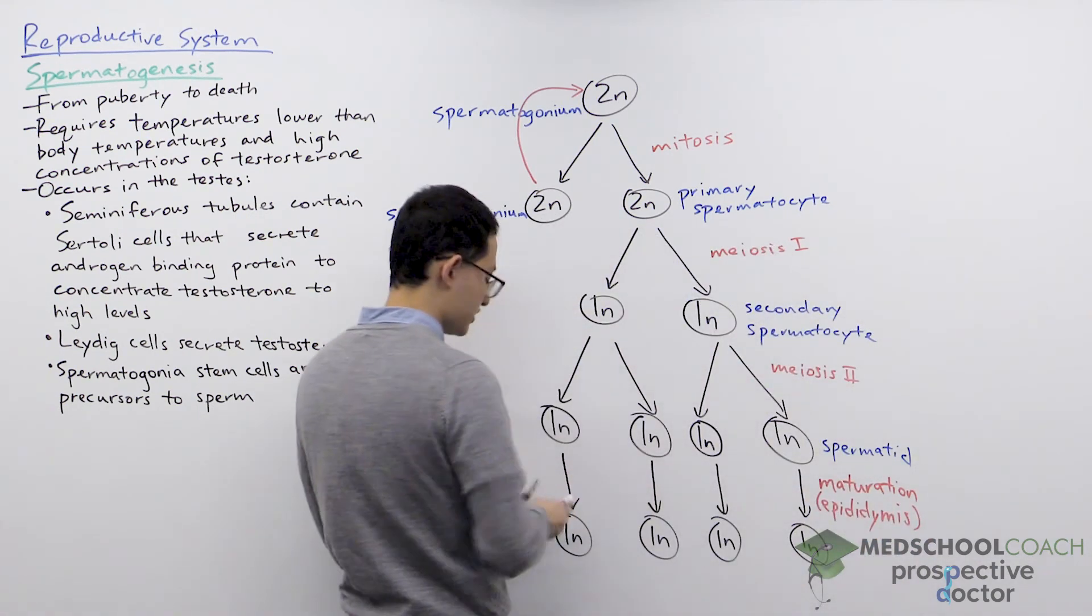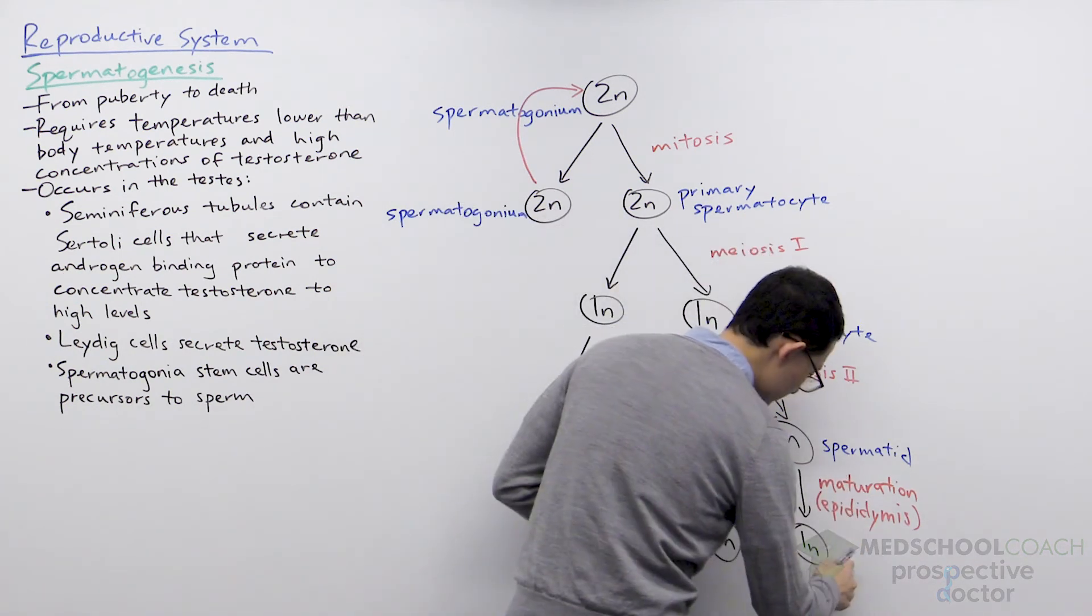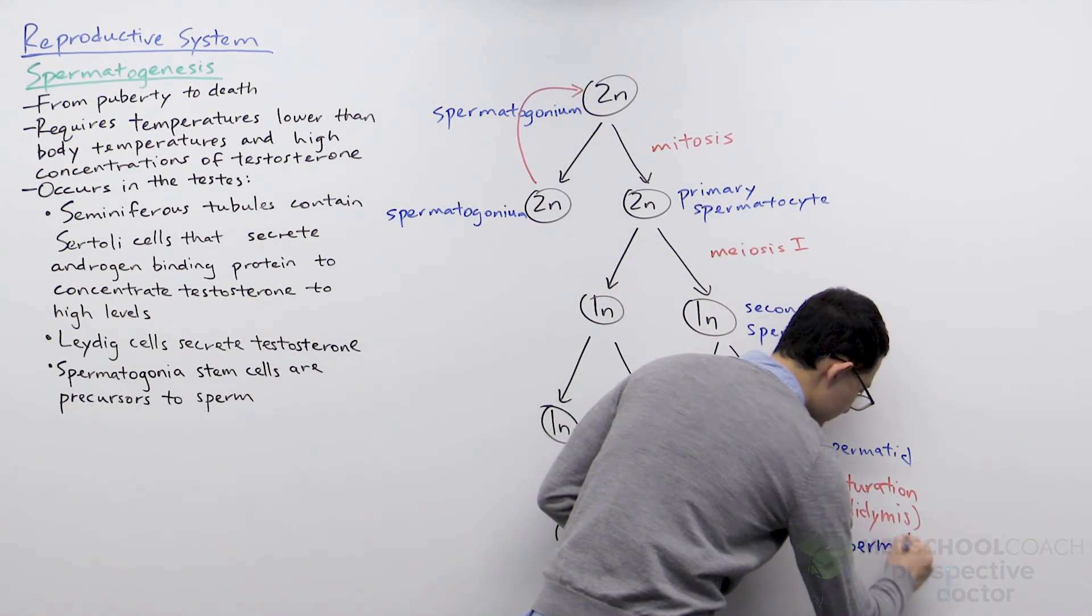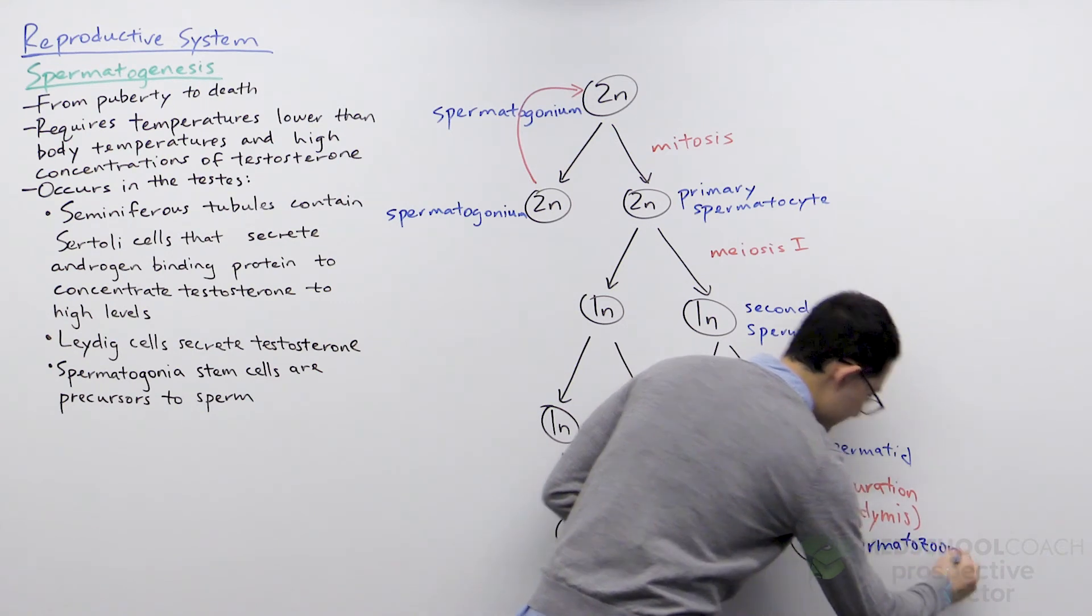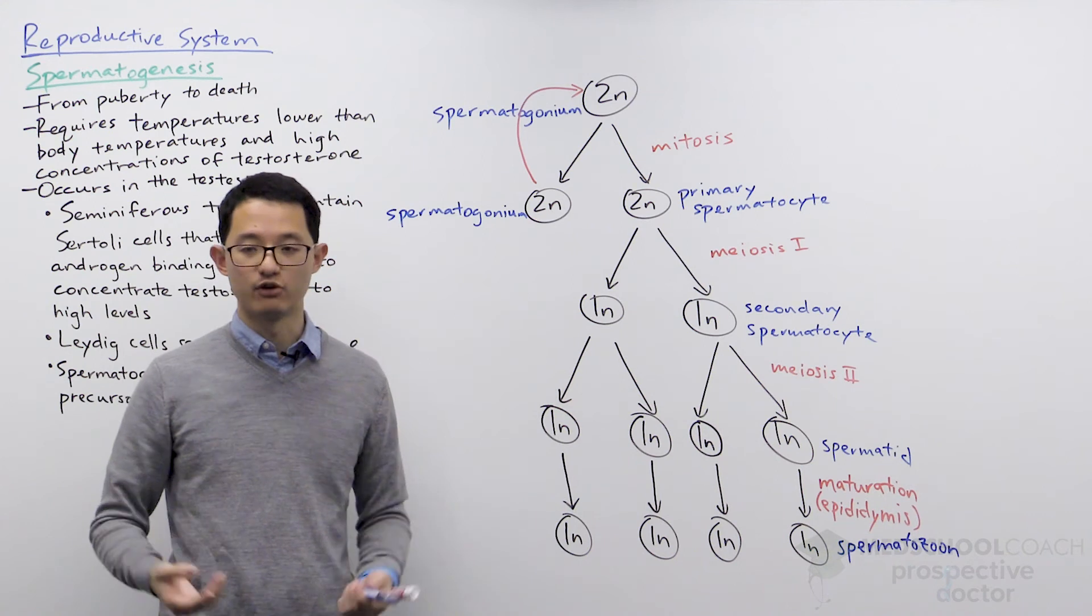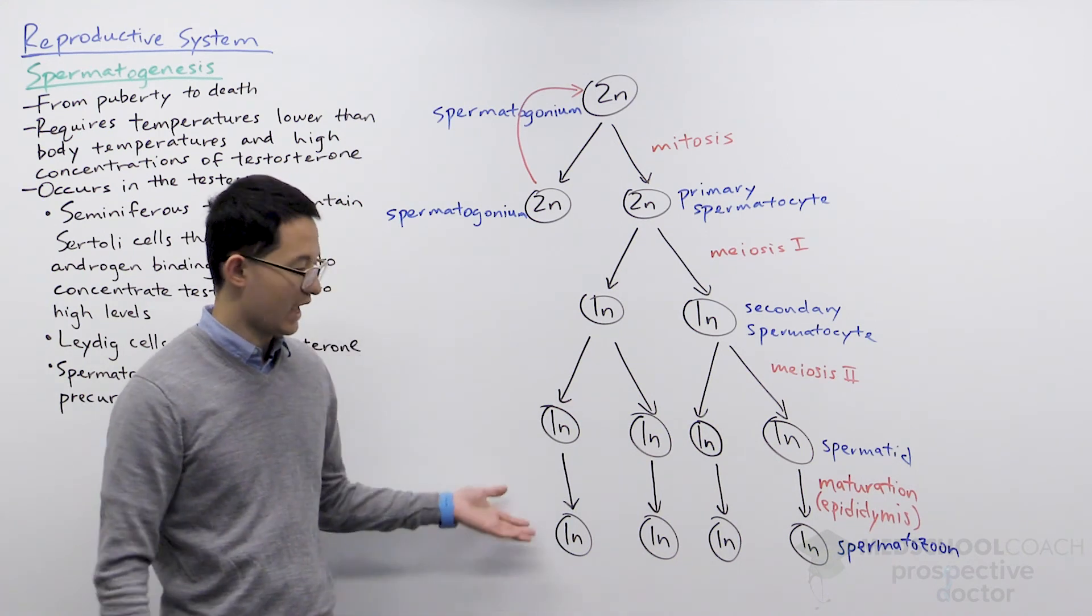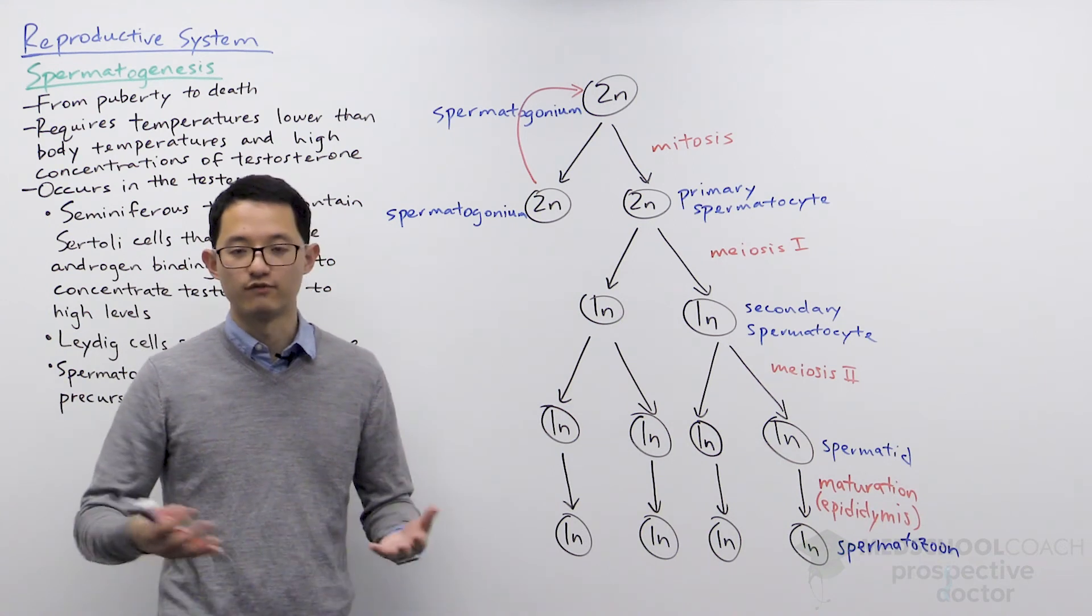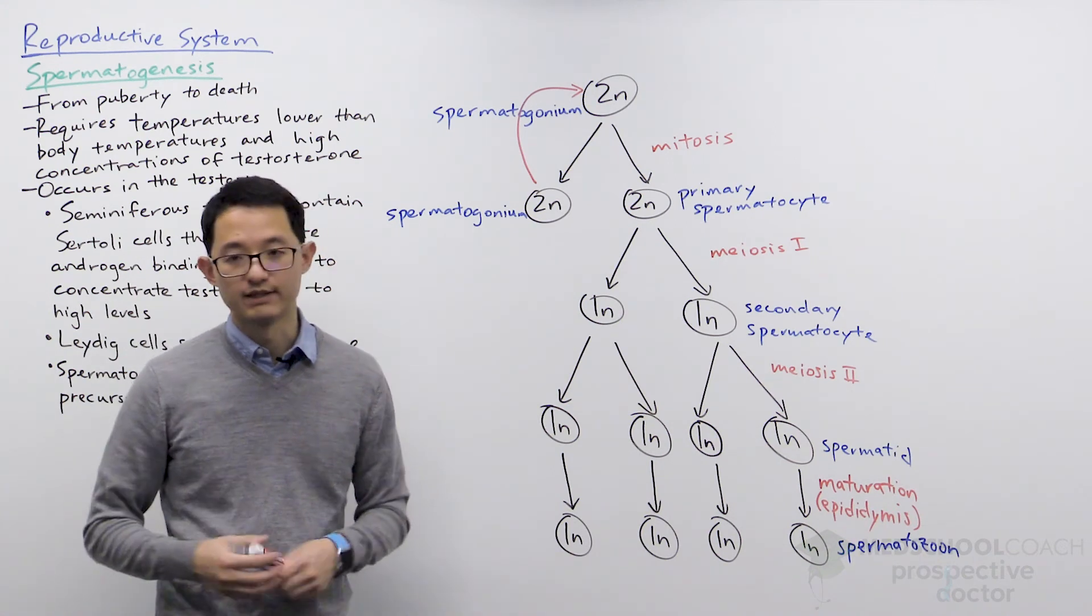And once the sperm have matured, the adult matured forms are called spermatozoa. The plural for spermatozoon is spermatozoa. We often talk about the epididymis as storing spermatozoa, which are the mature forms of sperm that can impregnate females.